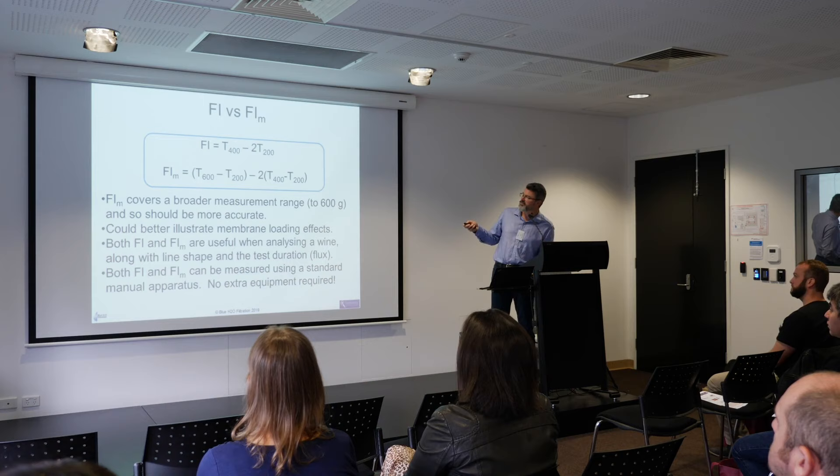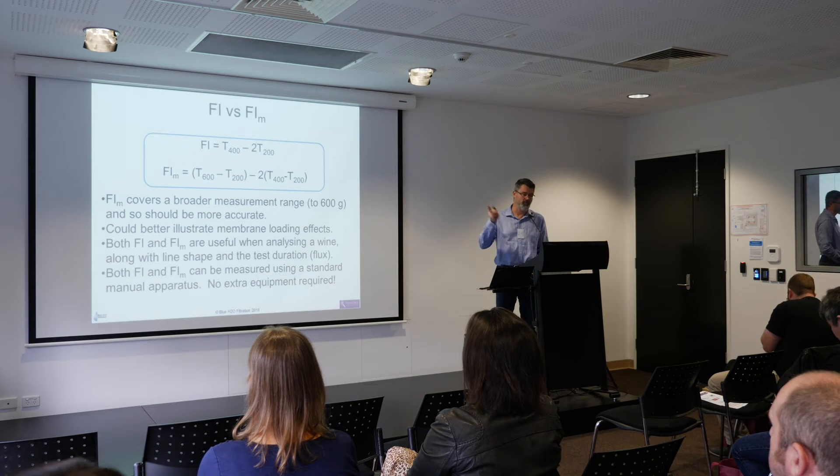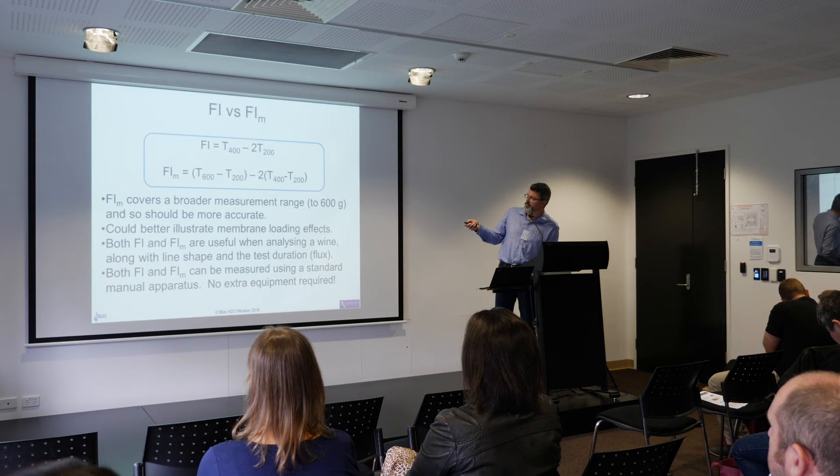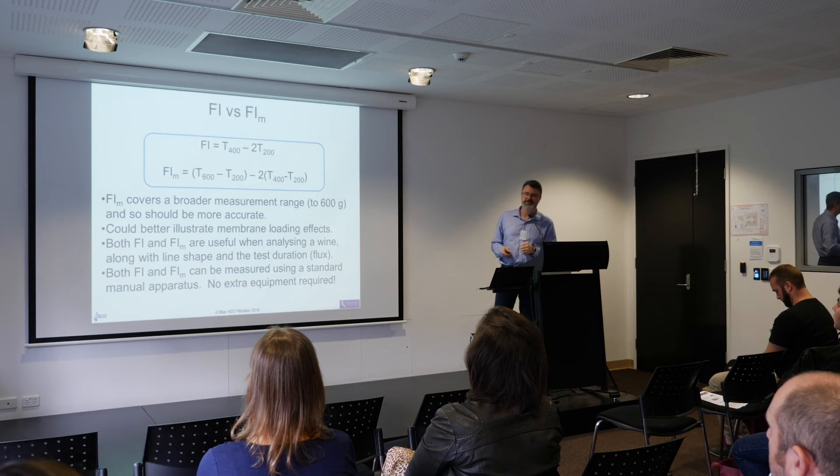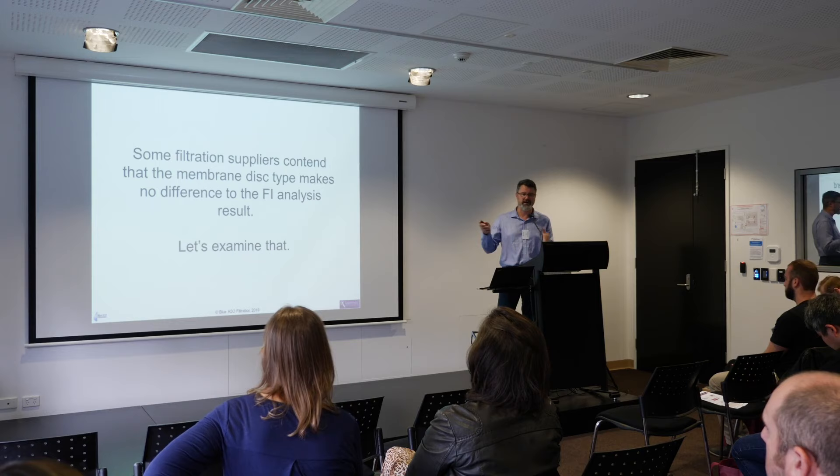Filterability index: you can extrapolate the test as long as you want, but generally there are two values that are quite useful. The standard calculation — the filter index — uses 200 and 400 ml data points. But you can extend to 600 ml to get a third data point. This formula is the same but goes up to 600 ml instead of 400, moving and expanding the data set. The comparison of these two indexes is most useful in determining how a wine will behave. There is danger in just looking at one number — you can miss what's happening at the longer part of the test.